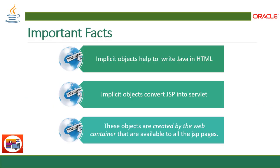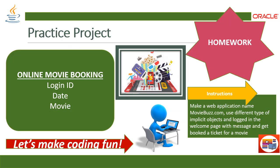Now let's review the important facts about implicit objects. Java is embedded in HTML to become JSP. These implicit objects help write Java in HTML, they convert JSP into servlets, and these objects are created by the web container and are available to all JSP pages.